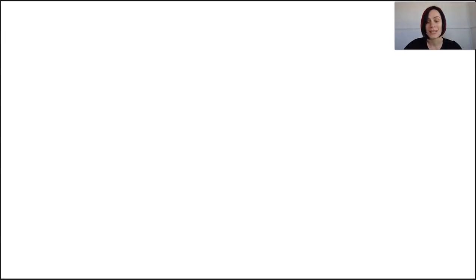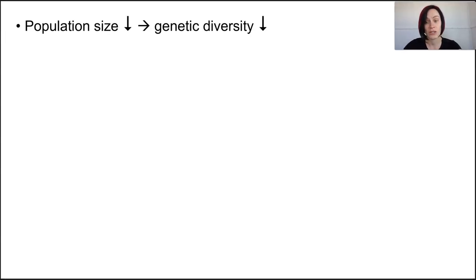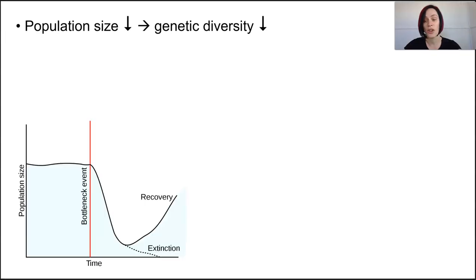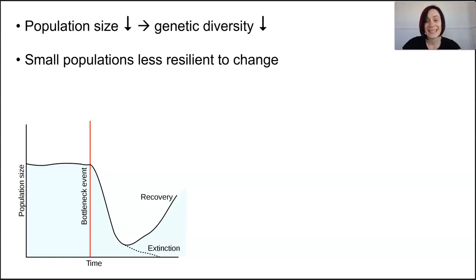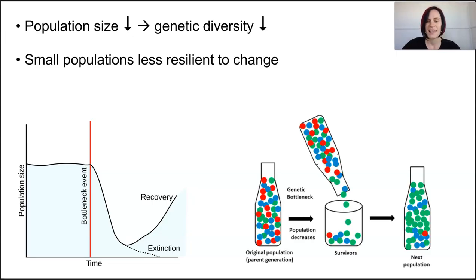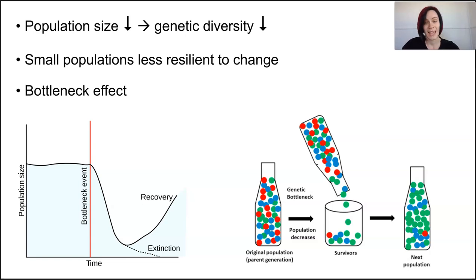Species become vulnerable to extinction when their population size decreases and, in turn, so does their genetic diversity. If populations are so small, they become less resilient to change in the environment. In a catastrophic event or natural disaster, there aren't too many phenotypes able to increase the chances of survival, so those that do survive do so by chance. This can lead to population bottlenecks.